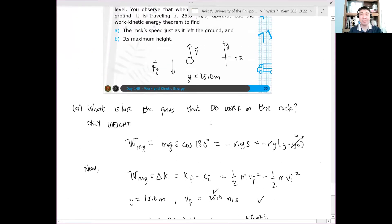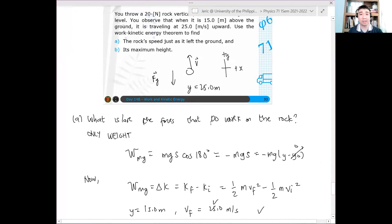So yun. Again, ang ginawa lang natin is we use the work exerted, work done by the gravitational force and related to the velocities to determine, for example, the final velocity, one of the quantities. Sorry, initial velocity pala. Tsaka, in another case, we determine the... We use the Work-Kinetic Energy Theorem to determine the maximum height, which is just the displacement from the initial height to the maximum height for which the final velocity vanishes. Yun yung ginawa natin sa problem na to.